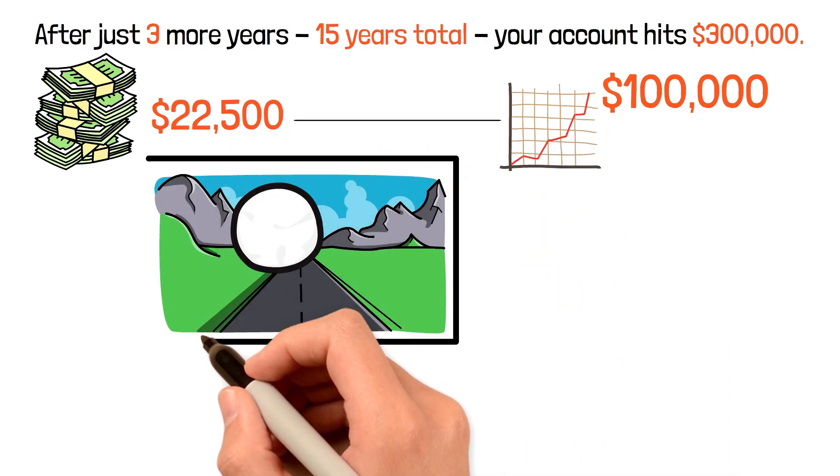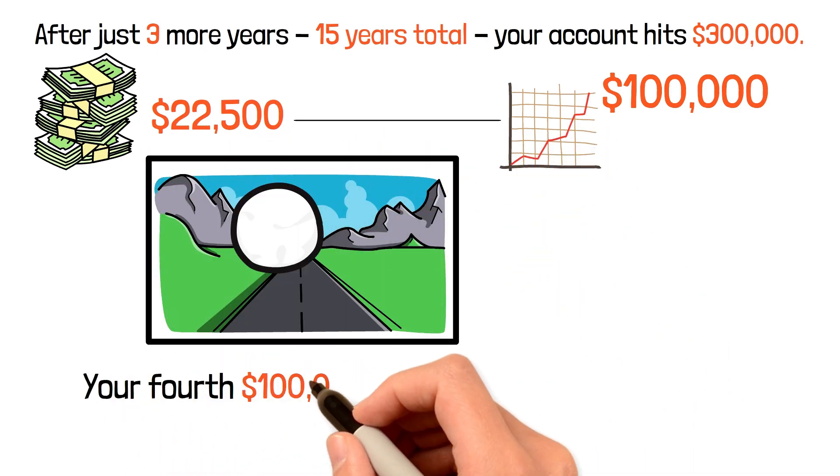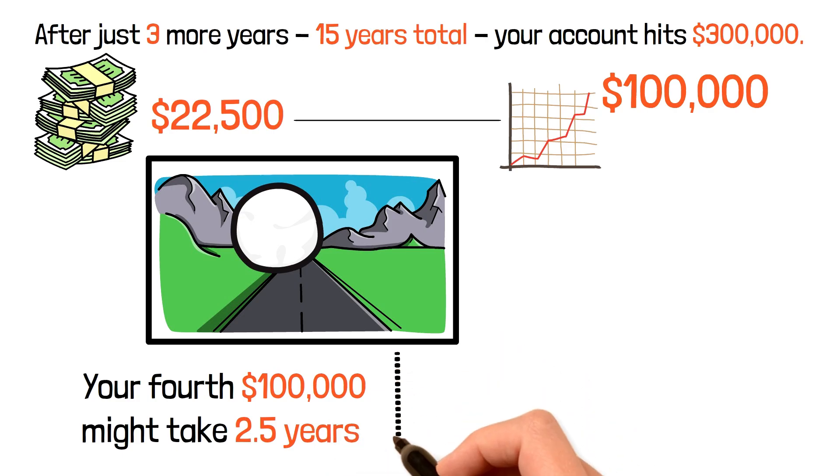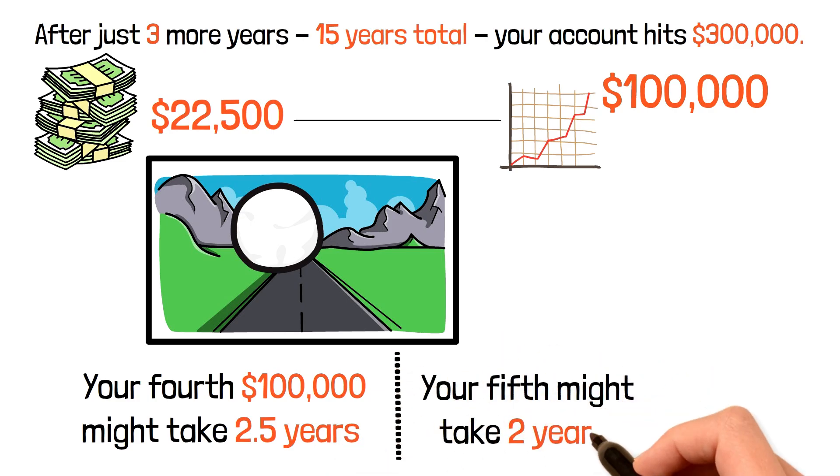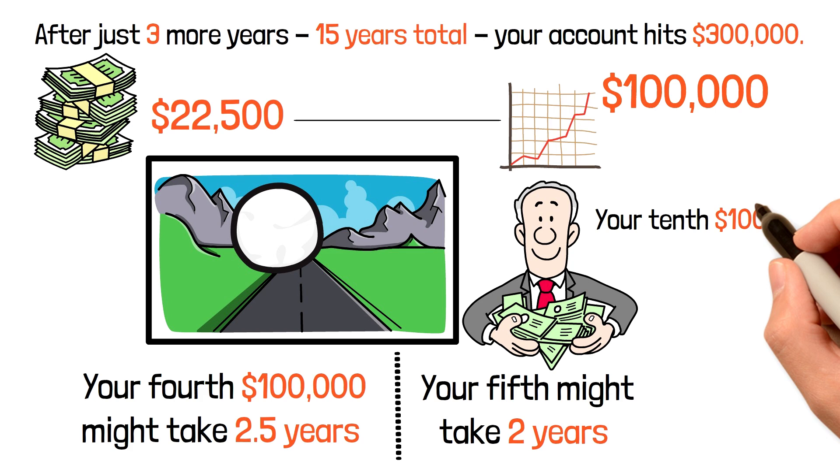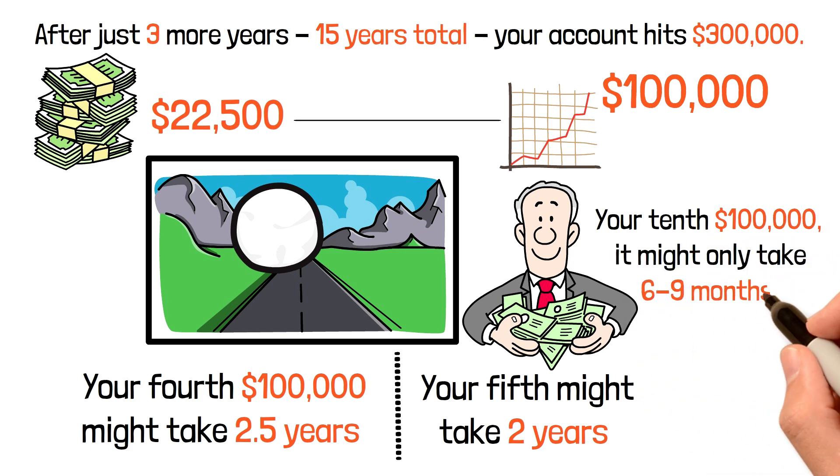This acceleration continues. Your fourth $100,000 might take two and a half years. Your fifth might take two years. By the time you're accumulating your tenth $100,000, it might only take six to nine months.